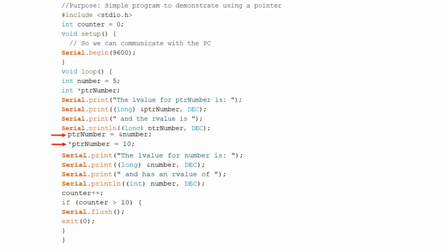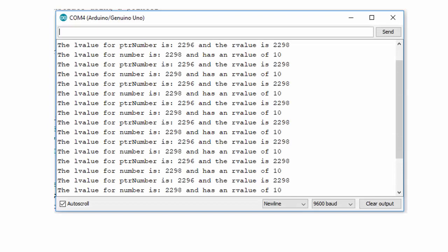Now let's add these two statements to the program previously discussed. Now the output is as follows. Notice that the r value of variable number now displays as 10 rather than 5. The reason is because the first of the two new statements initializes pointer variable to point to number variable using the address operator.